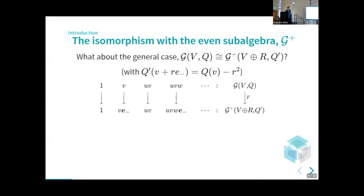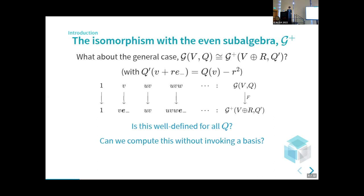In the general case, we're taking the algebra over a generic quadratic form Q and sending it to the algebra where we add one more coefficient — instead of using the vector space V, we take the direct sum of V and the scalars. Our quadratic form over that new V plus R·e-minus is just the quadratic form for V minus R squared. We can write down the math in the same way where we add e-minus to all the odd-graded elements and don't do anything for the even ones. But it's not clear that this is well-defined in the general case — changing basis might leave the result different.